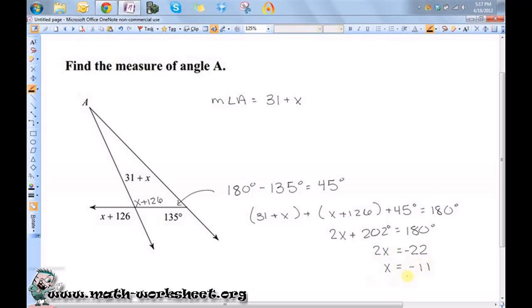Well, we're not done, because we were asked to find the measure of angle A. We weren't asked to find x. However, we know that the measure of angle A is 31 plus whatever x happens to be. So, it's plus negative 11. So, the measure of angle A is equal to 20 degrees.